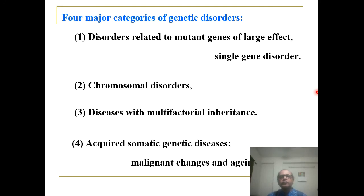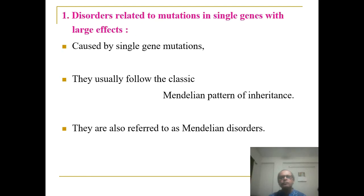Genetic disorders are usually classified into four categories. The main three categories are: disorders related to a mutant gene of large effect, that is single gene disorder; chromosomal disorders; and diseases with multifactorial inheritance. Disorders related to mutation of a single gene with large effect are caused by single gene mutation and usually follow the classic Mendelian pattern of inheritance. They are also referred to as Mendelian disorders.